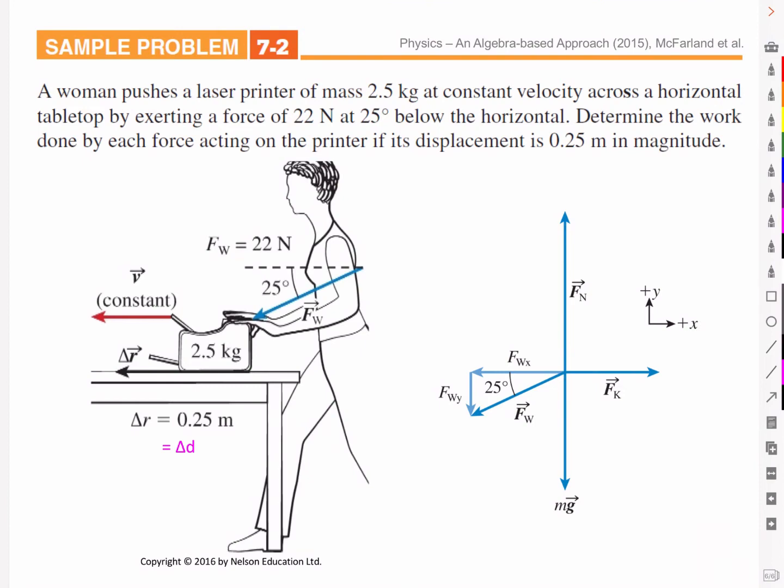Let's look at a very simple example that demonstrates the work due to friction. A woman pushes a laser printer of mass 2.5 kg at constant velocity across a horizontal tabletop by exerting a force of 22 newtons at 25 degrees below the horizontal. Determine the work done by each force acting on the printer if its displacement is 0.25 meters in magnitude.